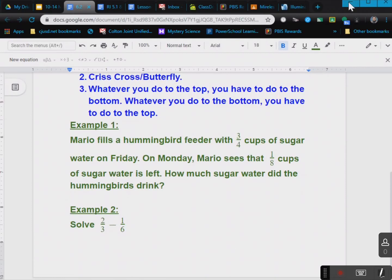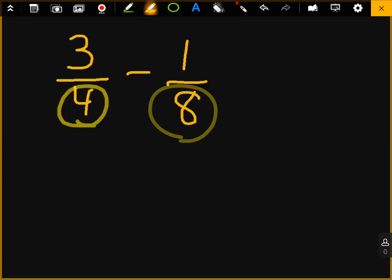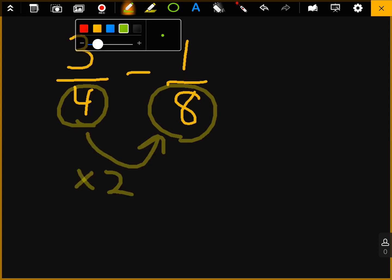So looking at this problem, they're asking you to subtract. And you're going to be subtracting three-fourths minus one-eighths. So, you want to ask, do any of these numbers go into each other? Well, I can see here that the four goes into the eight. You just have to multiply. To get from the four to the eight, you have to multiply it by two. So let's go ahead and do that.